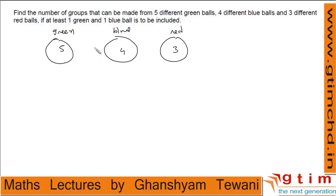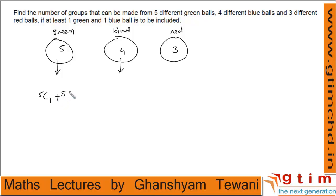We have to select balls such that the selection includes at least 1 green and 1 blue. For red balls, we can have 0, 1, 2, or 3 selections. For green balls, the condition is at least 1. So the number of ways for green balls is 5C1 + 5C2 + 5C3 + 5C4 + 5C5, which equals 2 power 5 minus 1 = 31.